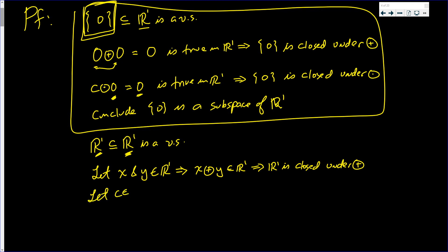Let c be any real number. So c circle dot x. This is in R1. Because c is a scalar, a real number. And x is in R1. And since R1 is a vector space, is closed. So this implies that R1 is closed under circle dot.